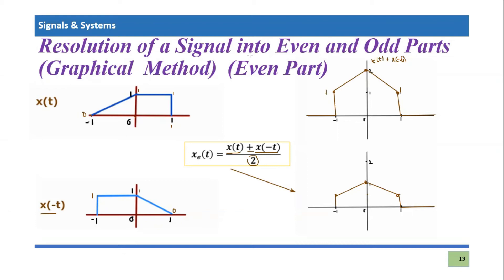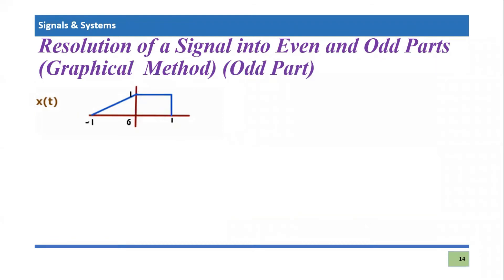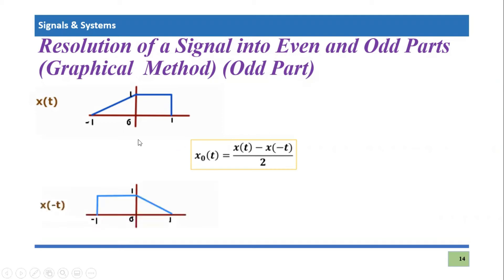Now let's talk about the odd part. We will do the same thing using the formula for the odd part, which is x_o(t) = [x(t) minus x(-t)] divided by two. Again, we need x(-t), which is the time reversal. So the time-reversed version will be subtracted from the original signal. Let's draw a graph to perform this subtraction graphically.